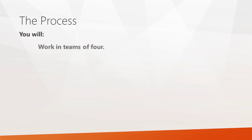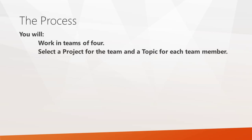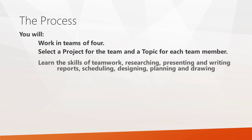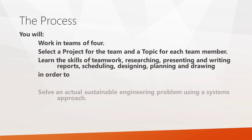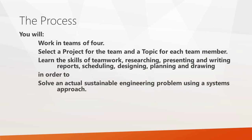Students initially start in teams of four. They select a project and a topic for each team member, and will acquire the skills of working as a team: presenting, writing, designing, and drawing. The aim is to solve a real sustainable engineering problem using a systems approach.